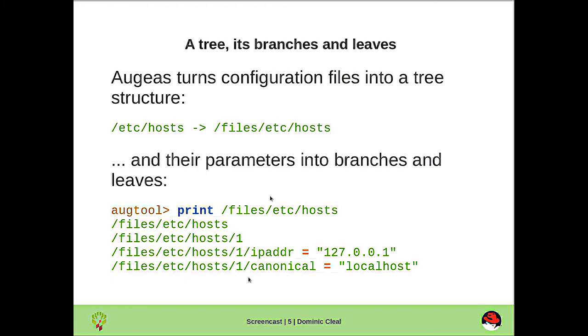Each of these nodes then has a value, so we see the IP address has a value 127.0.0.1, and the canonical hostname has the value localhost.